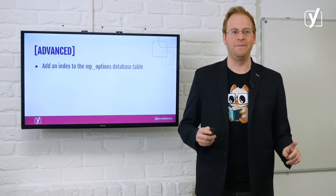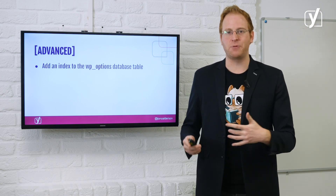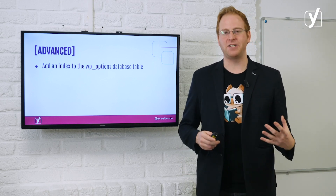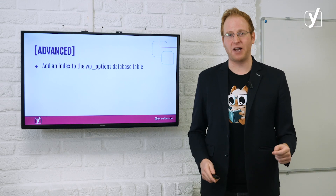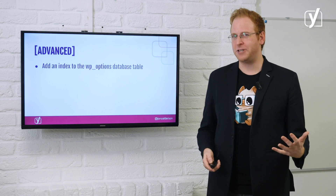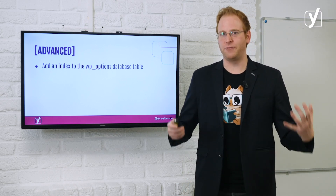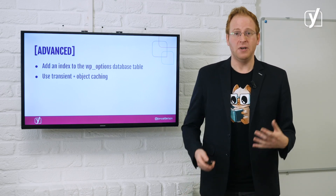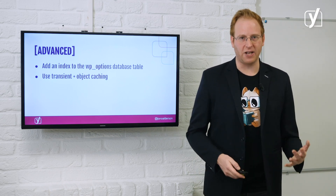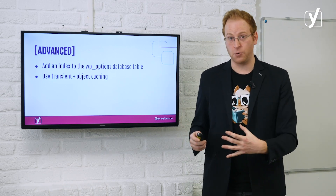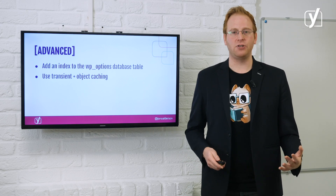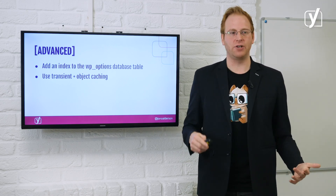If you want to get more advanced, you can make your WP options database table faster. If you've got a big site, this may be one of the most impactful things you can do to speed up the backend — it's something WordPress core should probably do out of the box. Similarly, if you've got a complex site or sophisticated theme, make sure the developers understand how WordPress's object caching works. They can cache bits of the code so that it doesn't have to run every time.